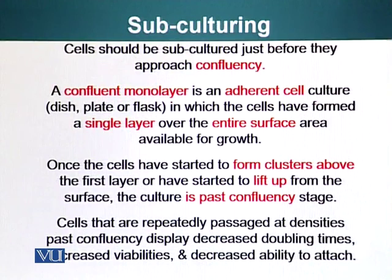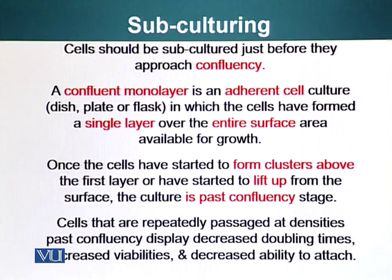Cells should be subcultured just before they approach confluency. A confluent monolayer is an adherent cell culture in a dish, plate, or a flask in which cells have formed a single layer over the entire surface available for growth. Once the cells have started to form clusters above the first layer — meaning cells are still dividing but there was no room available on the dish — so they started climbing upwards forming clusters. Or if they have started to lift up from the surface, the culture is past the confluency stage.